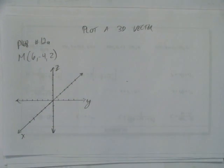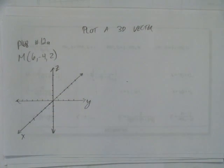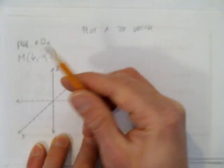In this video, we'll look at how to plot a 3D vector. This question is right out of your textbook, page 168, 12a, and the vector given is called m, which is 6, negative 4, 2.